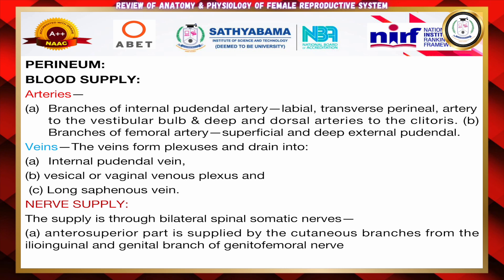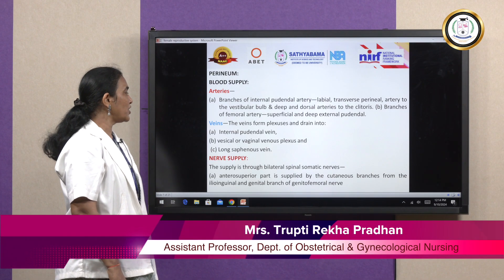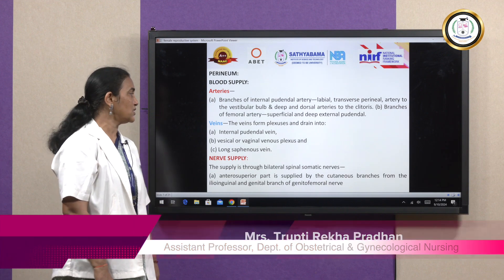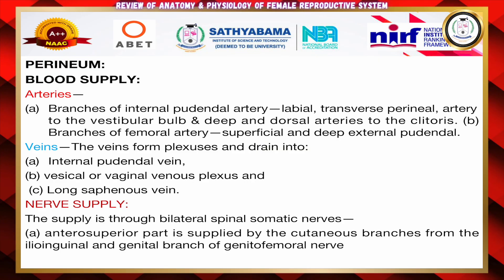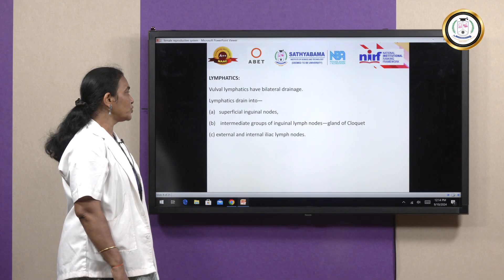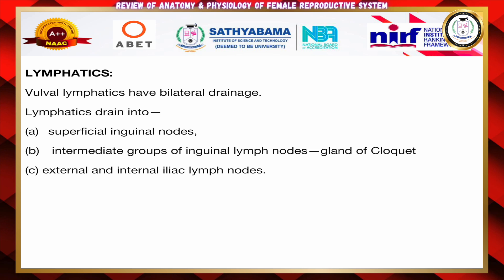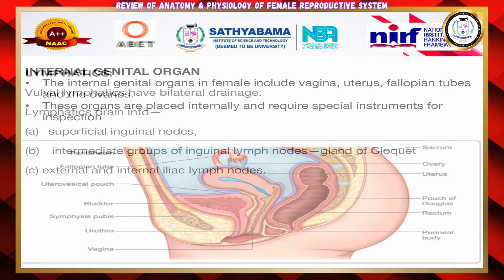Regarding nerve supply: there are bilateral spinal somatic nerves. The anterior superior part is supplied by cutaneous branches from the ilioinguinal and genital branch of the genitofemoral nerves. For lymphatics — vulval lymphatic has bilateral drainage: lymphatics drain to superficial inguinal nodes, intermediate groups of inguinal lymph nodes called the gland of Cloquet, and external and internal iliac lymph nodes.